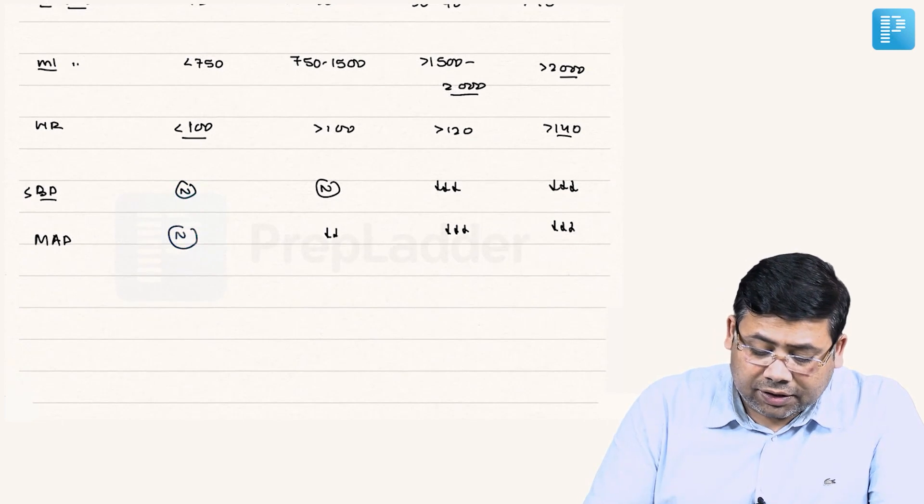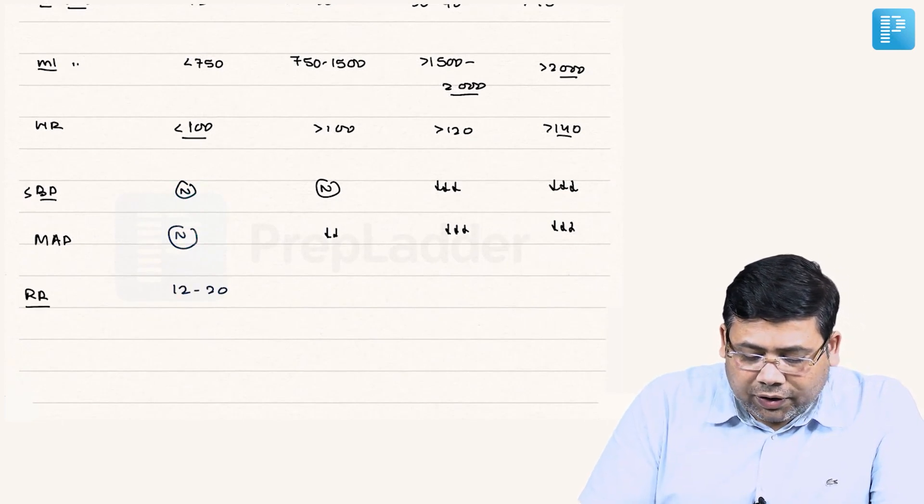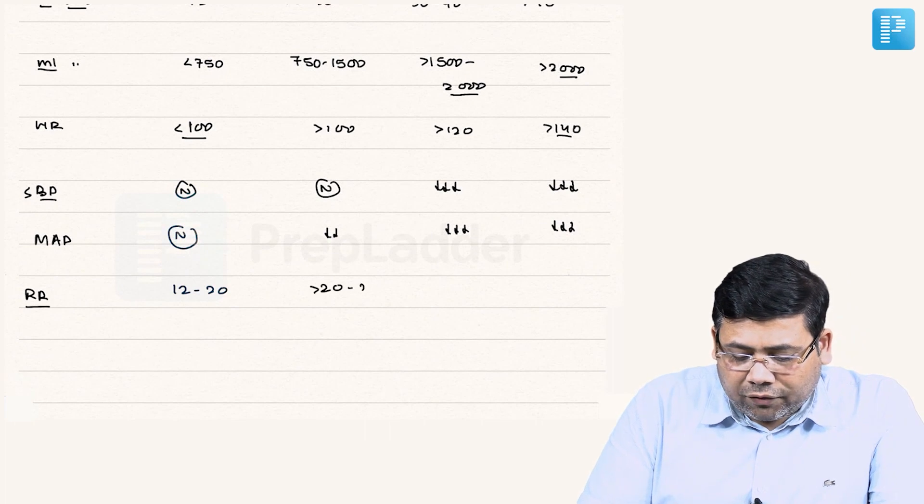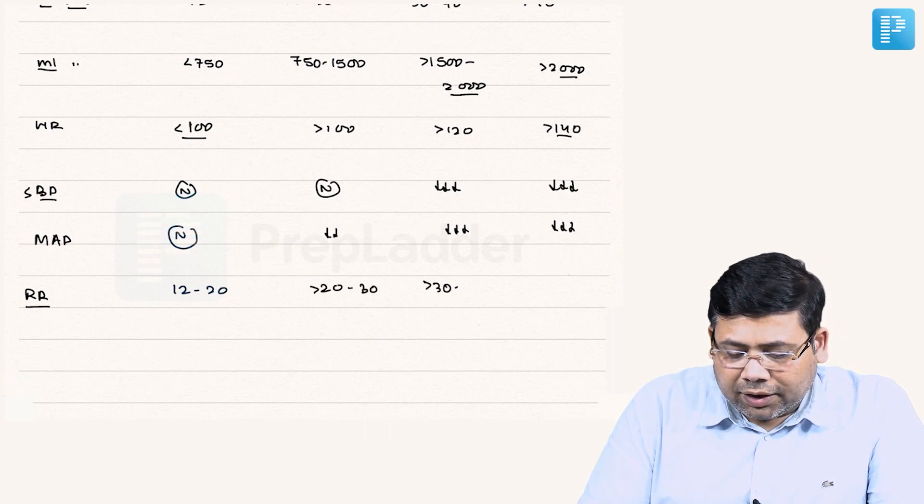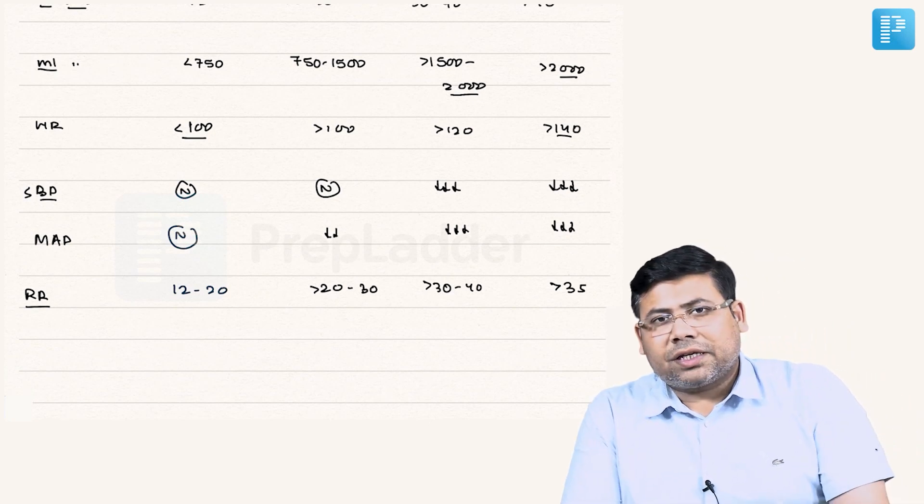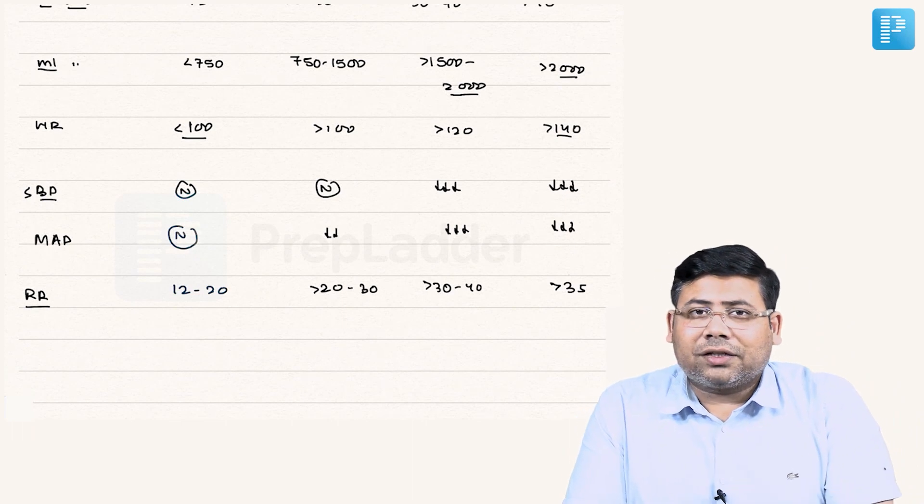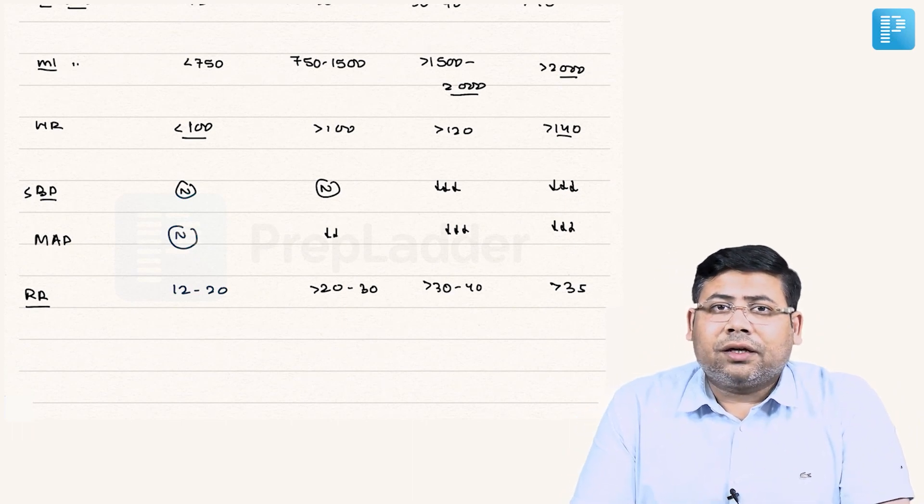If you see the respiratory rate of the patient: 12 to 20, 20 to 30, more than 30 up to 40, and persistently elevated breath count above 35 is significant. Here the breath count was 35, but the other factors were matching the window of grade 3 hypovolemic shock.